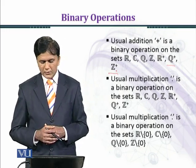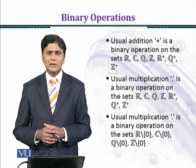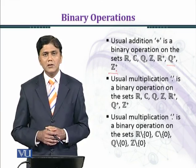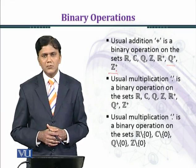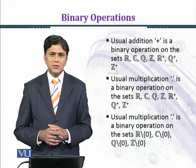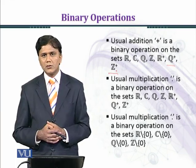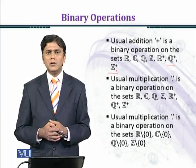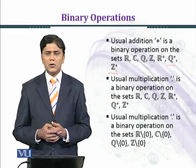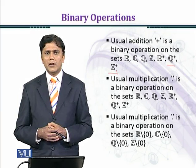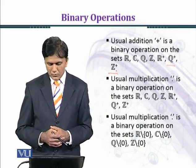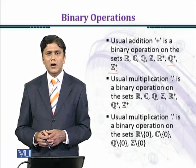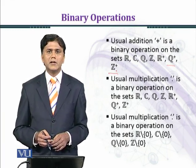Usual multiplication is also a binary operation on R\ {0} (non-zero real numbers), non-zero complex numbers, non-zero rational numbers, and non-zero integers. When you multiply two non-zero integers, for example (−5) × (+7) = −35, you get a non-zero integer. So multiplication is a binary operation on R\{0}, C\{0}, Q\{0}, and Z\{0}.